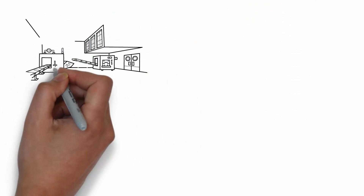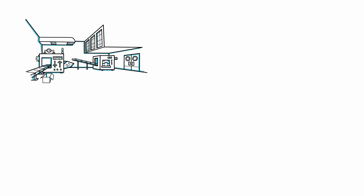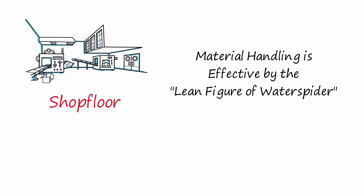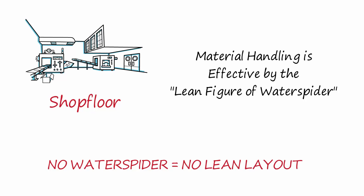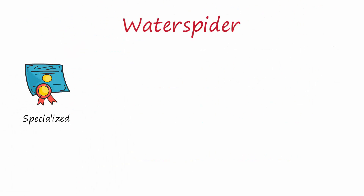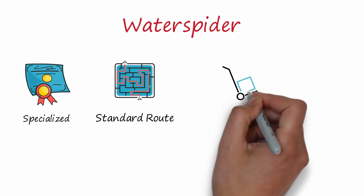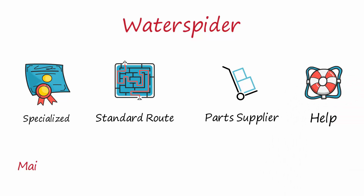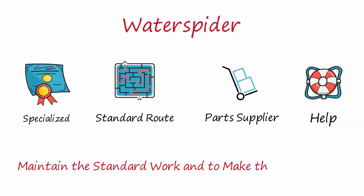If we pay attention to the shop floor, one of the effective and efficient methods of material handling is achieved through the lean figure of the water spider. It could even be said that a layout without the water spider is not a lean layout. The water spider is a highly specialized figure who follows a standard tour within the company. During this tour, he supplies the necessary parts, helps with changeovers, and assists operators whenever necessary to maintain the standard work and to make the material flow.